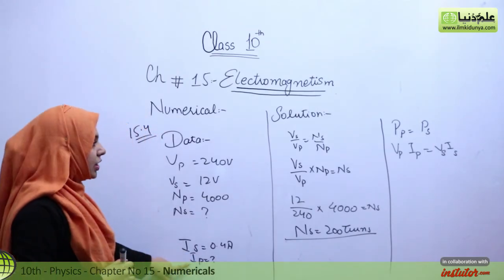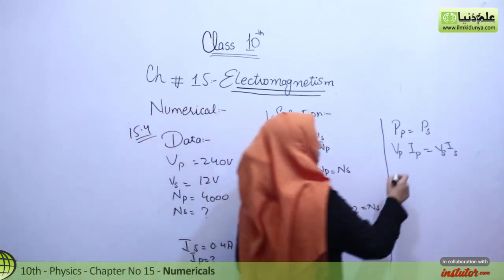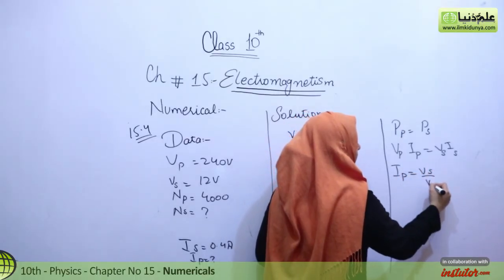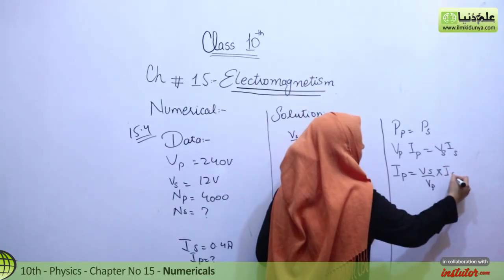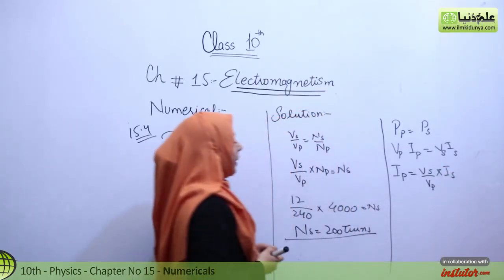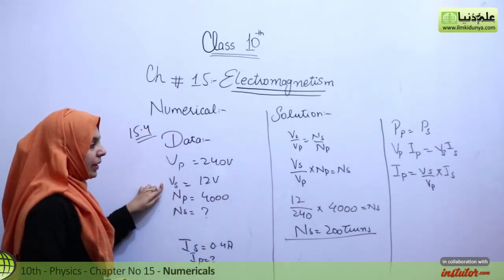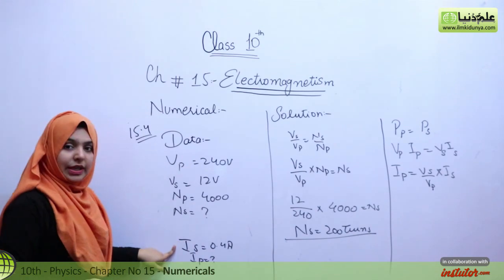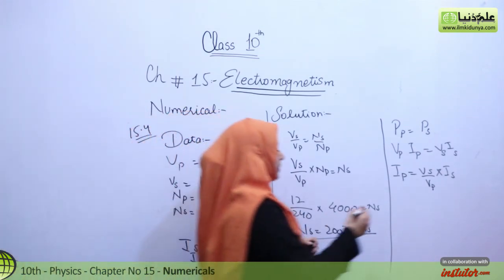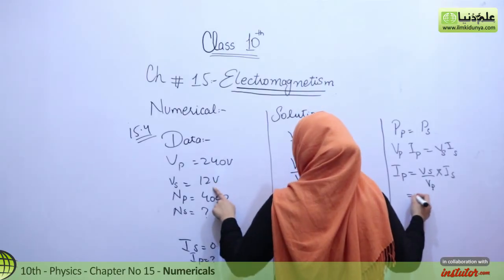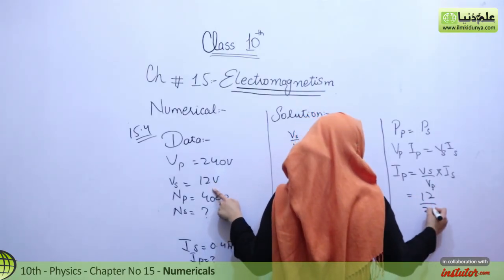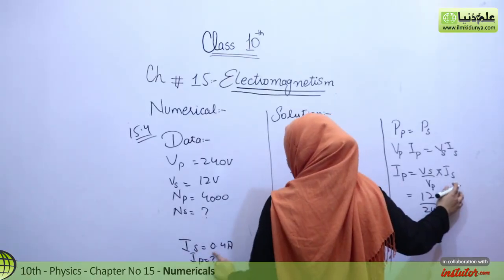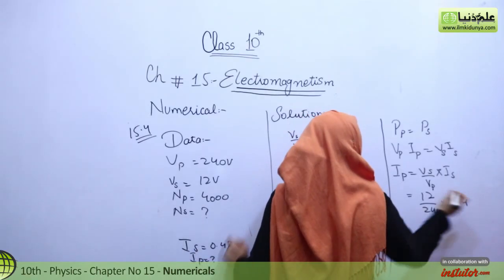We need to find IP, so we separate it out: IP equals VS over VP multiplied by IS. Now VS is given, VP is given, and IS is also given. We put in all the values: VS equals 12, VP equals 240, IS equals 0.4 ampere.